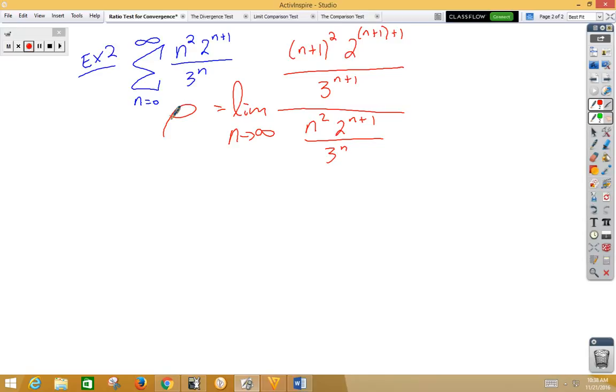So now we need to multiply by the reciprocal and break this up a little bit. But let's keep in mind that this piece here is now 2 to the n plus 2, but I'm going to go ahead and leave it so that it looks just like that. So I've got n plus 1 squared 2 to the n plus 1 times 2 to the first power over 3 to the n times 3 to the first power multiplied by the reciprocal 3 to the n over n squared 2 to the n plus 1.